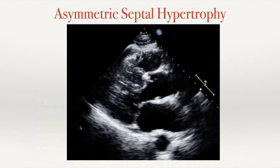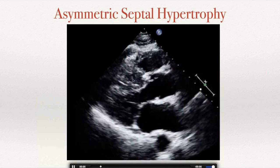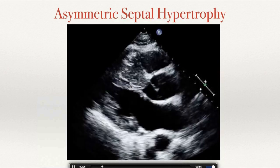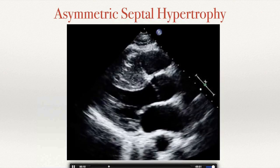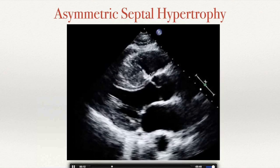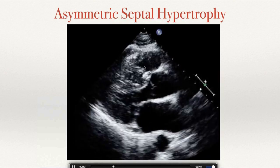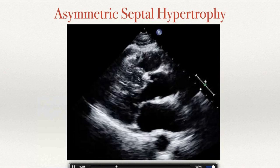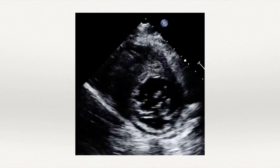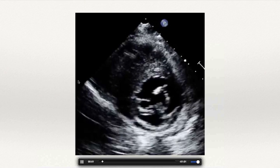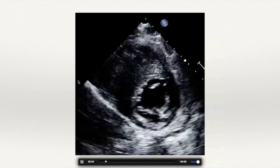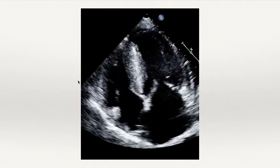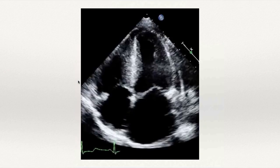Here are examples of asymmetric septal hypertrophy. You can see the hypertrophy in the septum compared to the anterior wall — it's asymmetrical. The same image is shown on short axis and four-chamber views as well.